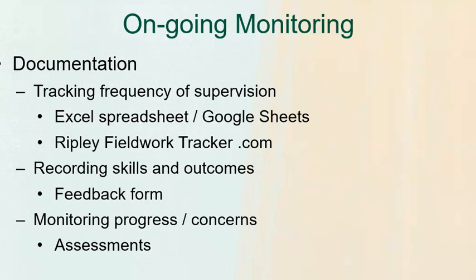The BACB used to have a tracker, which was nice, but they've discontinued that one. It's still available if you search for it, but they're not supporting it. You can use an Excel spreadsheet or a shared Google Sheets or a shared cloud-access sheet that both the supervisor and trainee are able to log.